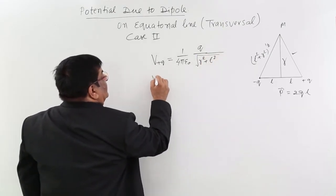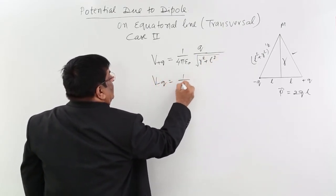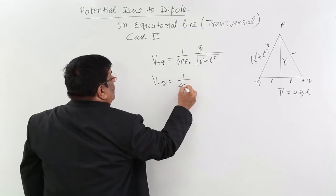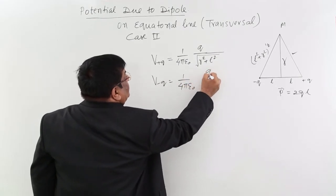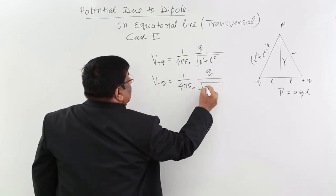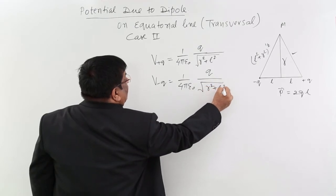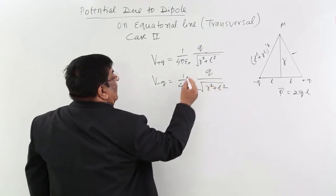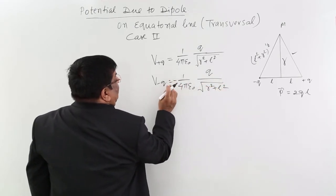Now V due to minus Q is equal to (1 / 4πε₀) × (−Q) / √(R² + L²). This distance is again √(R² + L²), and this potential is negative.